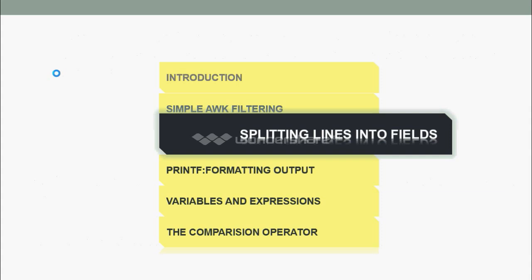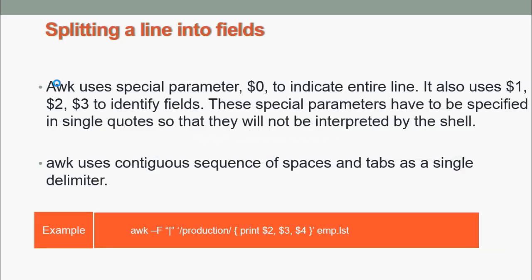Next, we are going to see about splitting lines into fields. AWK uses special parameter $0 to indicate entire line. It also uses $1, $2, $3 to identify fields. These special parameters have to be specified in single quotes so that they will not be interpreted by the shell. AWK uses contiguous sequences of spaces and tabs as a single delimiter.